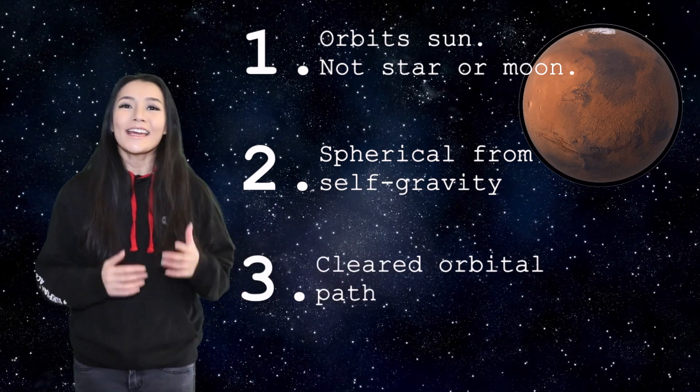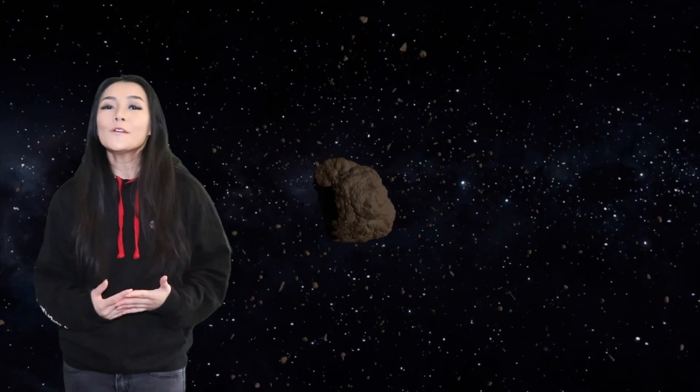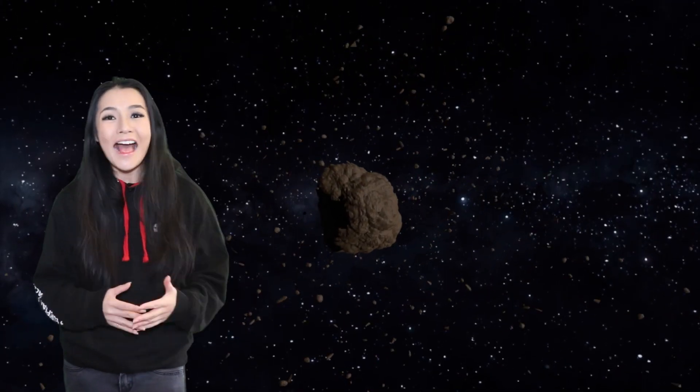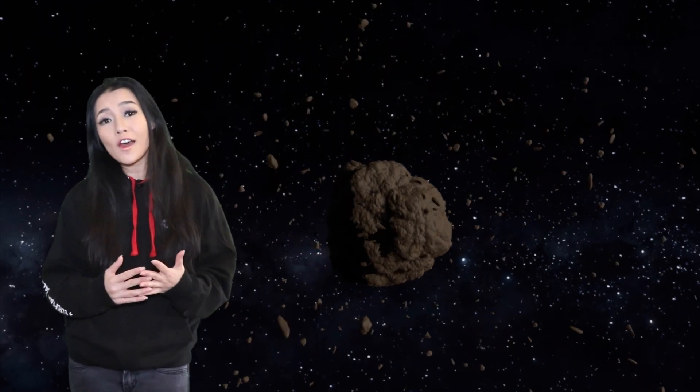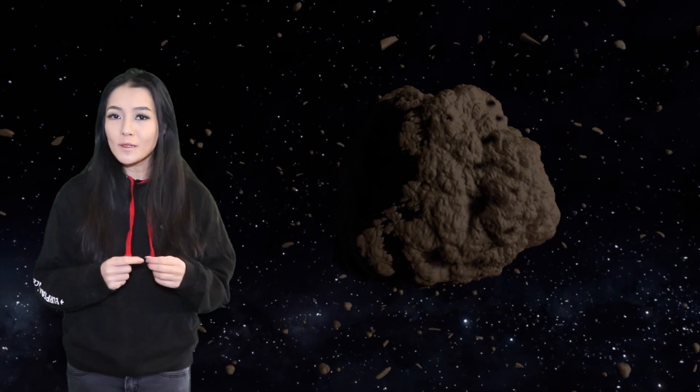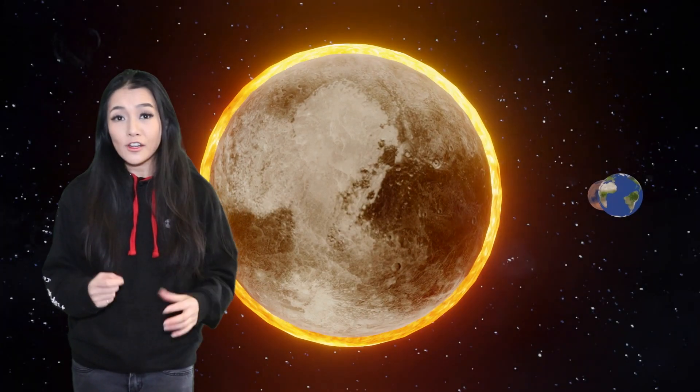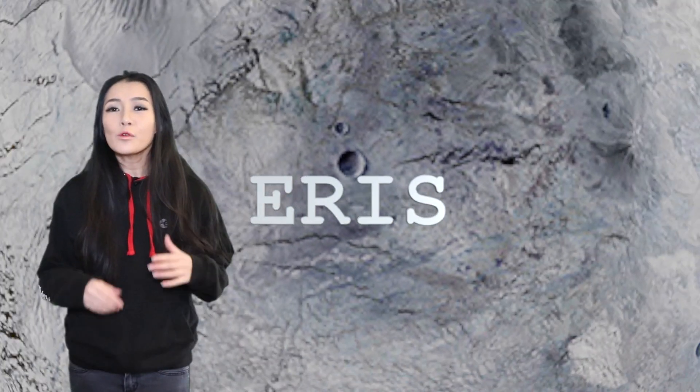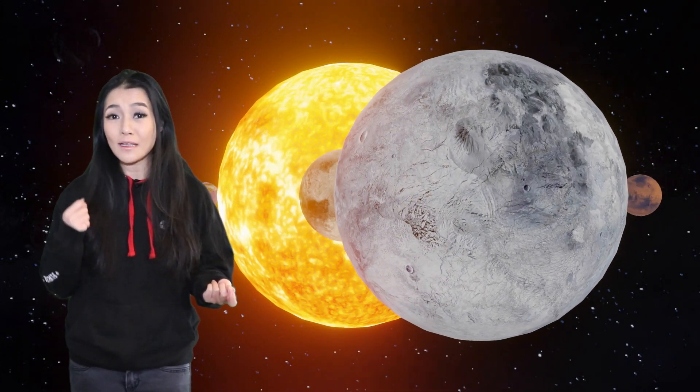And lastly it has to have cleared the neighborhood around its orbit. Pluto is not a planet because it hasn't yet cleared its orbital path. It's swarming with other icy comets and asteroids, and what's more, just beyond the orbit of Pluto there's another object known as Eris which has an even larger mass than Pluto's and it wouldn't be fair to call Pluto a planet unless we also called Eris a planet too.